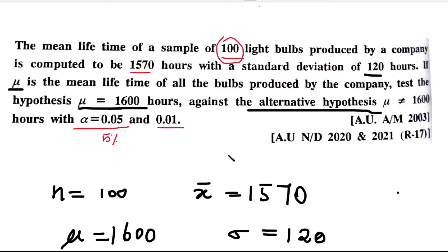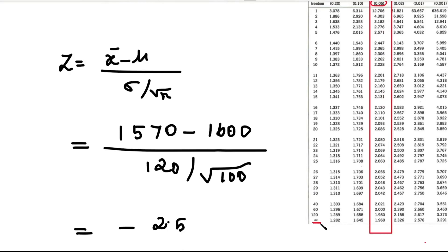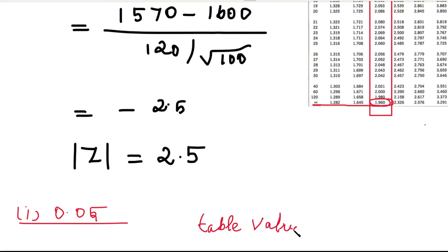Because n is greater than 30, we have a large sample. For a large sample, we use degrees of freedom as infinity in the table. With infinity as the degrees of freedom and a two-tailed test, we look up the table value.